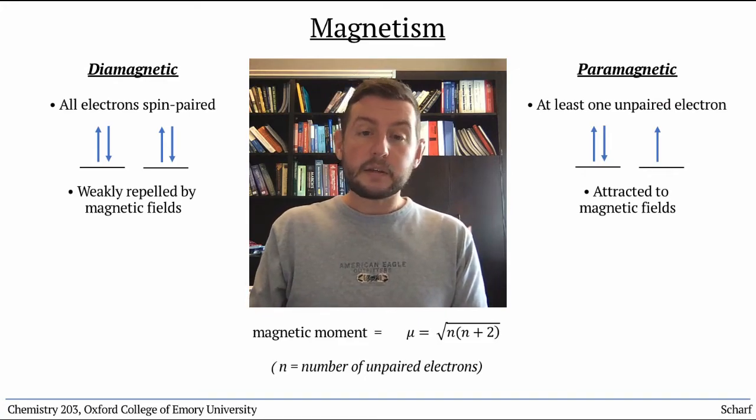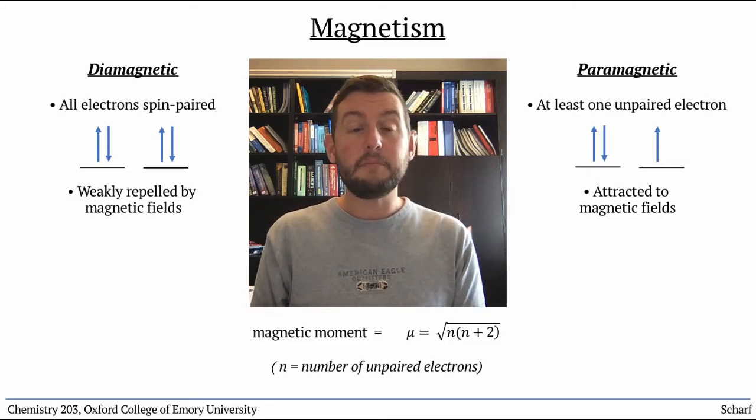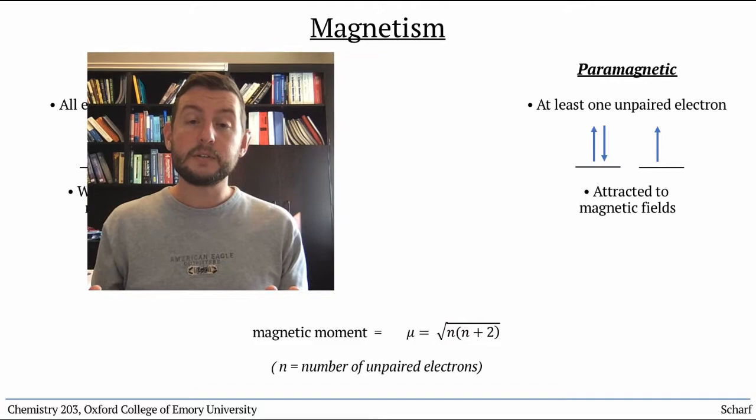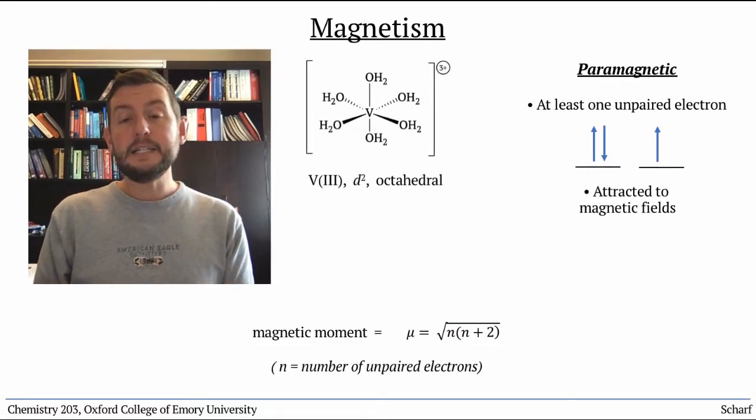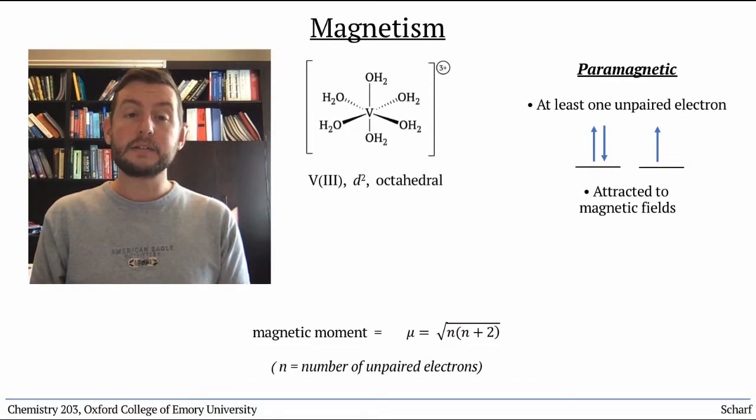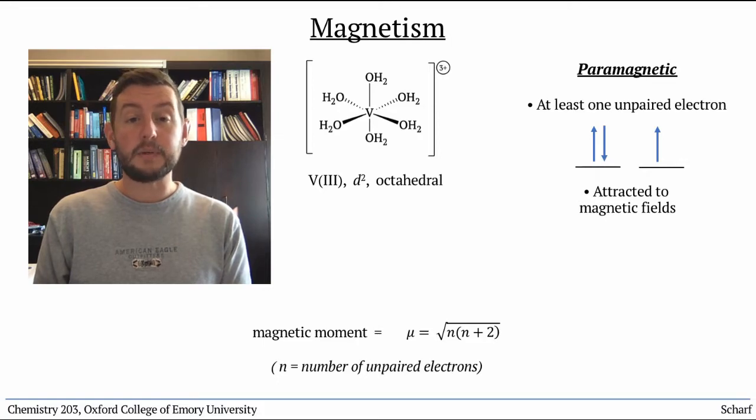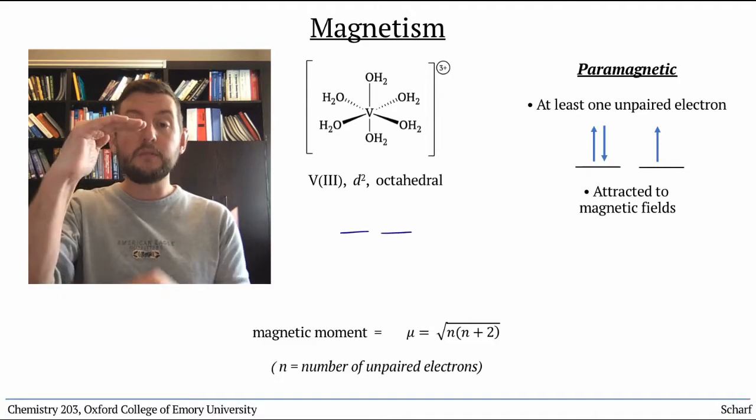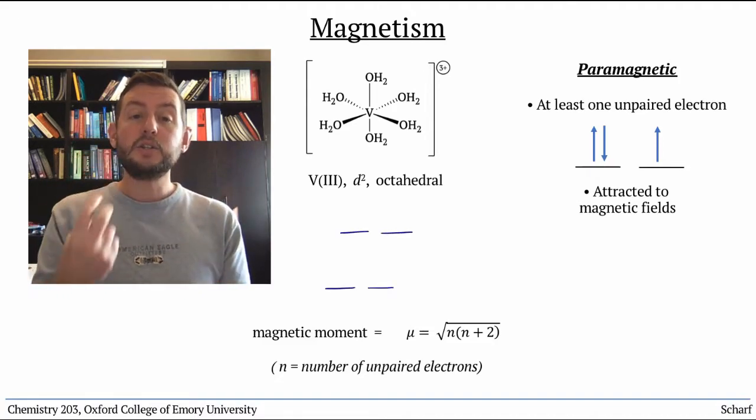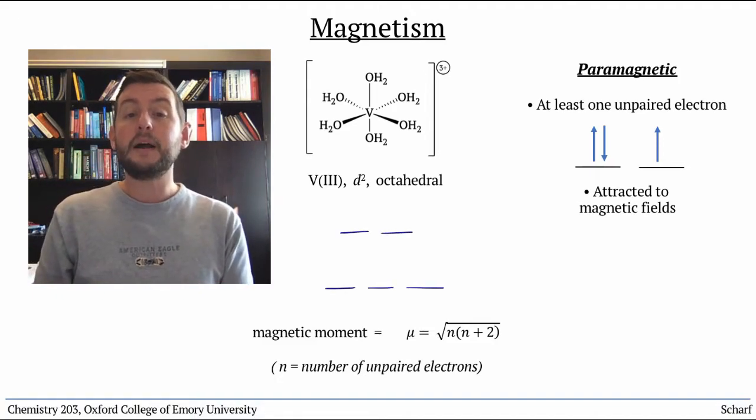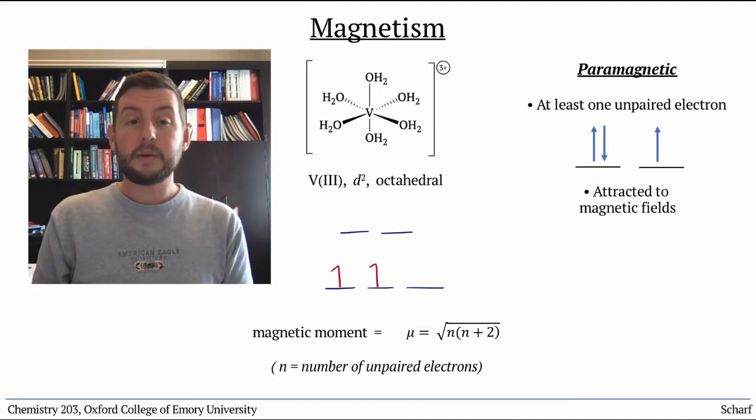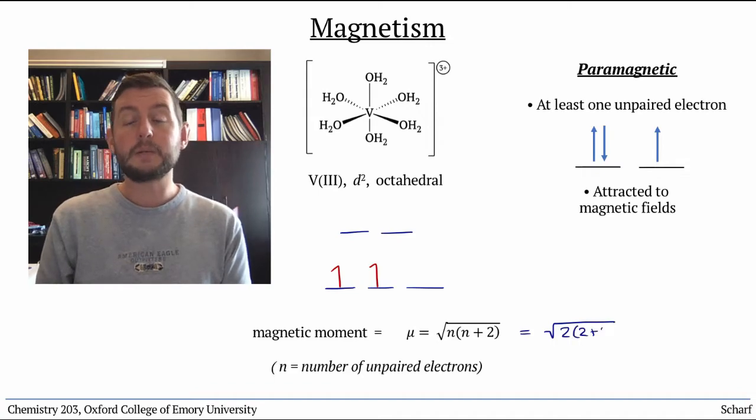But even some compounds with even numbers of electrons can be paramagnetic if the electrons occupy different orbitals. For instance, a d2 octahedral complex, like the hexa-aquo-vanadium-3 cation, has a d orbital splitting diagram with the typical 2 over 3 pattern, and the two d electrons occupy two degenerate orbitals like this. This compound has a magnetic moment of approximately 2.8.